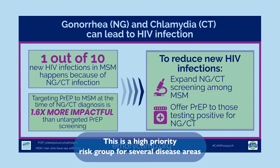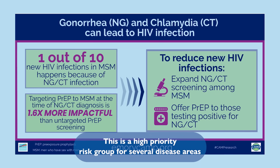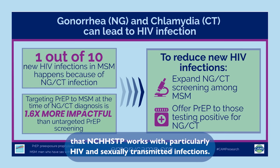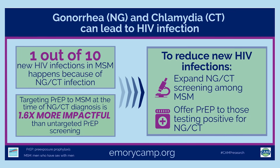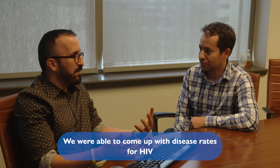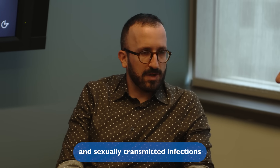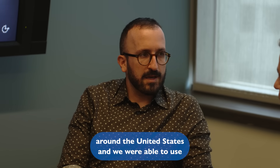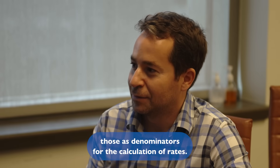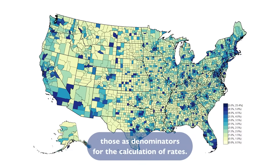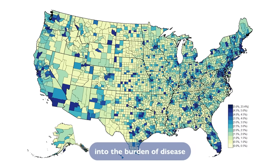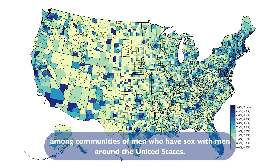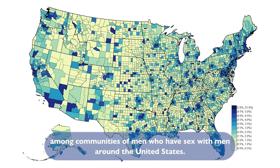This is a high-priority risk group for several disease areas that NCHHSTP works with, particularly HIV and sexually transmitted infections. We were able to come up with disease rates for HIV and sexually transmitted infections around the United States by using those population estimates as denominators for the calculation of rates. This let us make new maps which gave us tremendous insights into the burden of disease among communities of men who have sex with men around the United States.